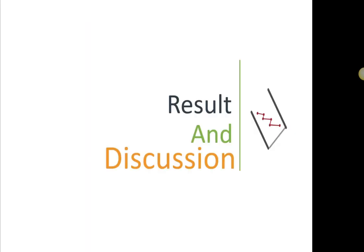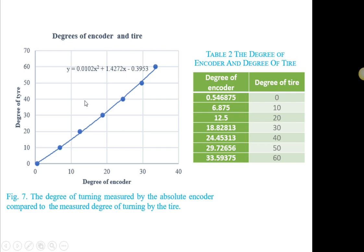So, now, we move to the result and discussion. So, to perform the experimental work in the laboratory, the autonomous vehicle is controlled manually by using a joystick. So, the joystick is the user input.